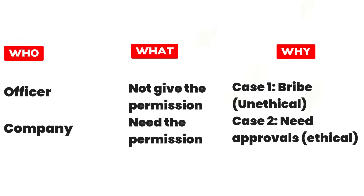In the WHY section for the officer: Case 1 — he won't give permission because he needs a bribe; Case 2 — because you do not have the necessary approvals. The first WHY — needing a bribe — is unethical. You have to mark these points because unethical root causes are not something you should solve within the options. The second WHY — that you need the necessary approvals — yes, that is an ethical issue you have to solve. This is how you approach a decision making set: list the WHYs, mark non-ethical ones as things you need not solve, and ethical WHYs as things you must solve through the options given.